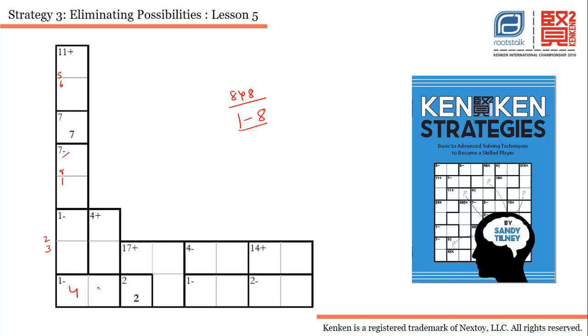If we are looking at 1 minus as the case result, then it has to be either 5 or 3. But if you look at this particular case, it says 4 plus, so the only possible combination for this is 1 and 3. So 3 is not possible. 5 is the only solution. Yes, 5 is the only solution for this.